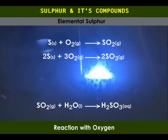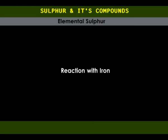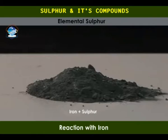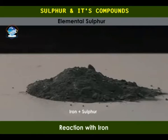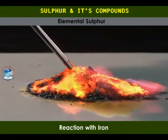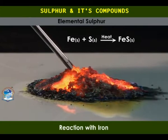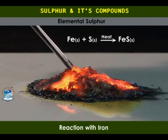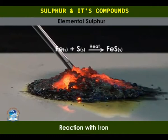Reaction with iron. When a mixture of iron and sulfur is heated, it starts to glow. The glow continues and increases in intensity even after the heating is stopped, showing that the reaction is exothermic. A black solid of iron(II) sulfide is formed. Other metals like zinc and copper also react with sulfur when heated, forming metal sulfides.